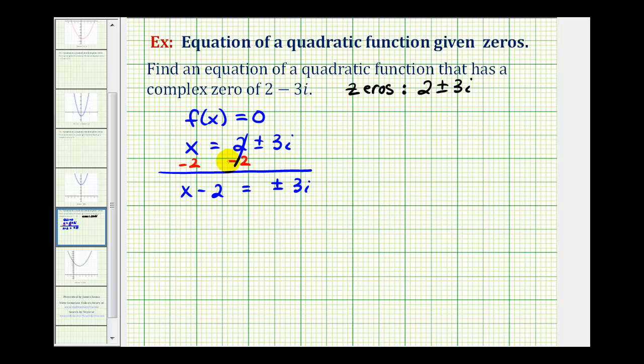From here we're actually going to square both sides of the equation. So now we have the quantity x minus 2 times the quantity x minus 2 equals on the right, whether we square positive 3i or square negative 3i, the result is still going to be positive 9i squared.